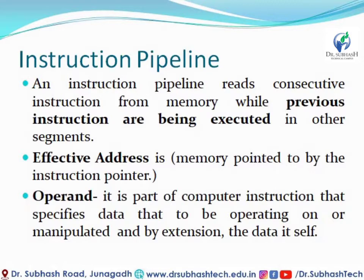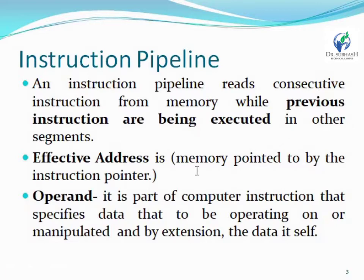The next point is effective address. What is the effective address? Effective address is a memory location pointed to by the instruction pointer. The next point is the operand point — it is a part of a computer instruction that specifies the data that is being operated on or manipulated, including the data itself.